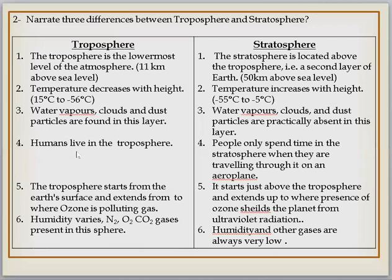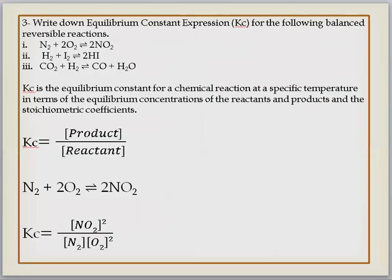If we talk about living, human beings live in the troposphere. If we talk about stratosphere, normally we are not there, but if we travel in the upper direction by aeroplane we can touch it. In troposphere, the ozone layer is polluted by different activities. In stratosphere, there is presence of ozone which shields the planet from ultraviolet radiation. In troposphere, humidity varies and nitrogen, oxygen, carbon dioxide gases are present. In stratosphere, humidity and different gases composition decreases. You can select any three of these differences.